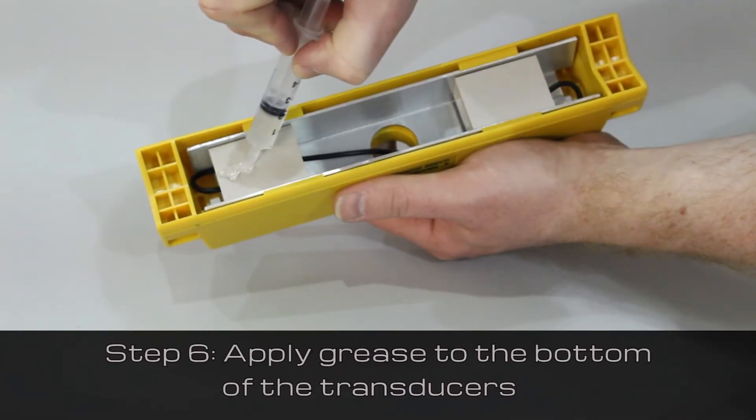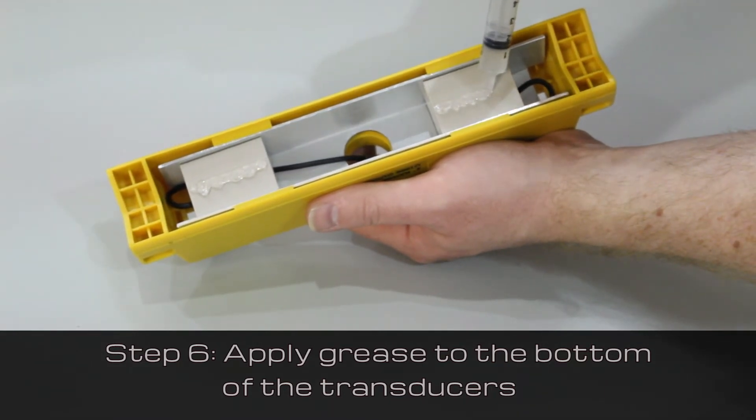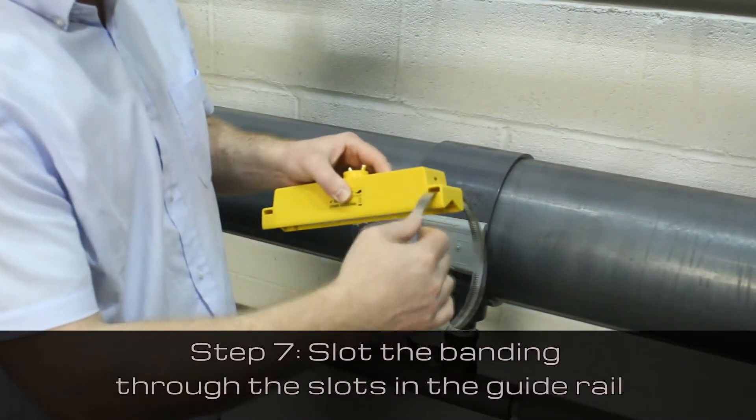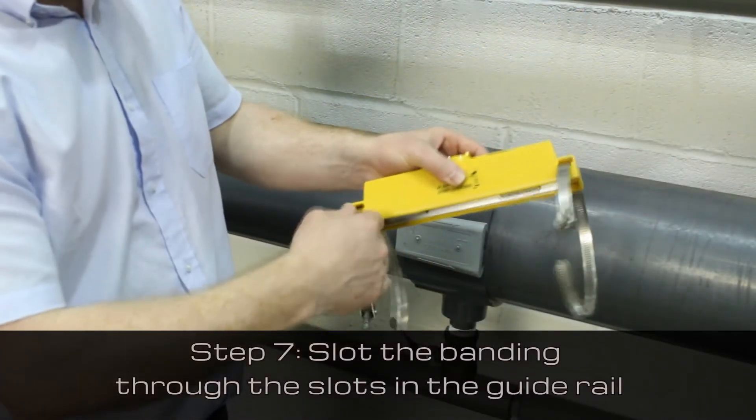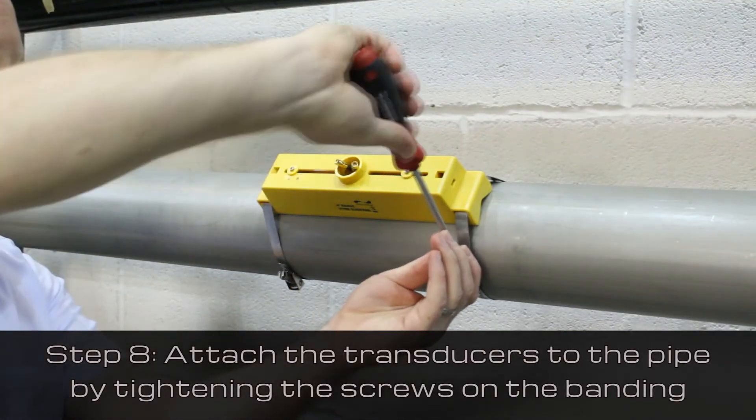Next, apply grease to the bottom of the transducers. Then, slot the provided banding through the slots in the guide rail. Attach the transducers to the pipe by tightening the screws on the banding.